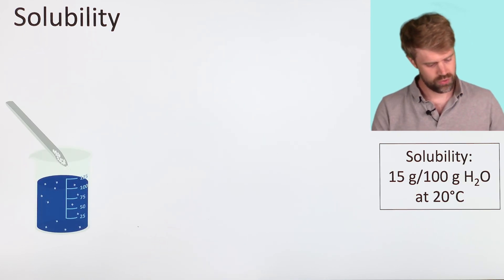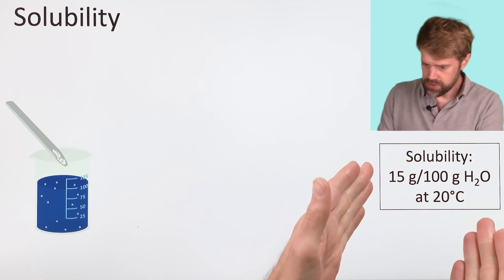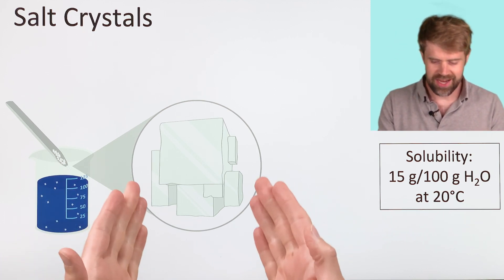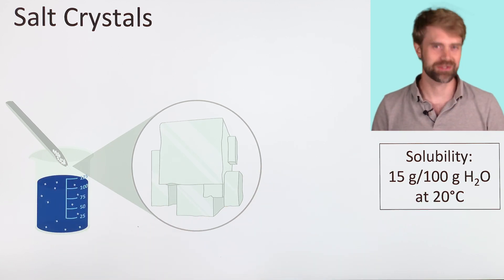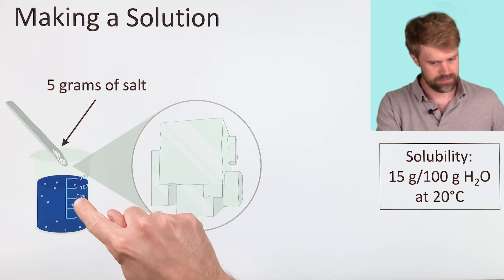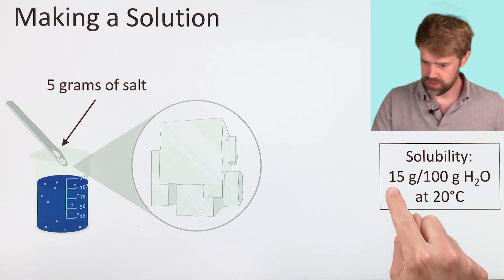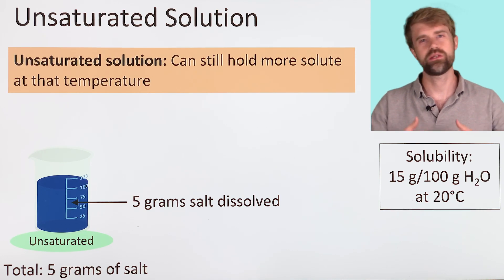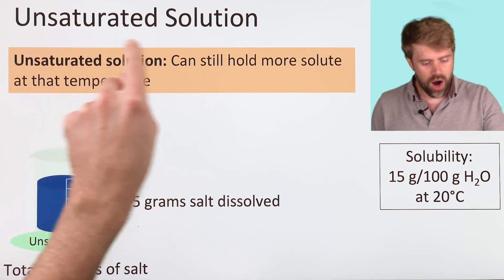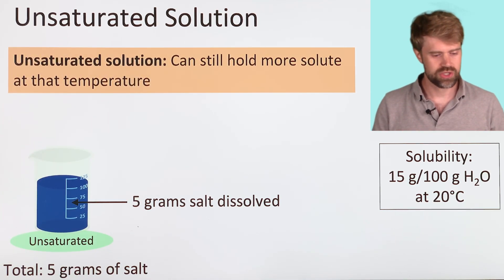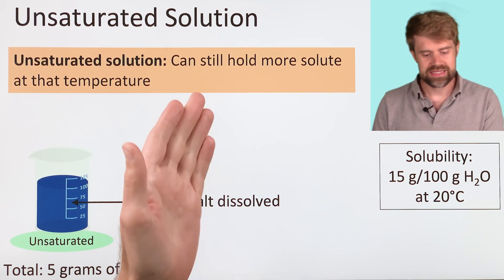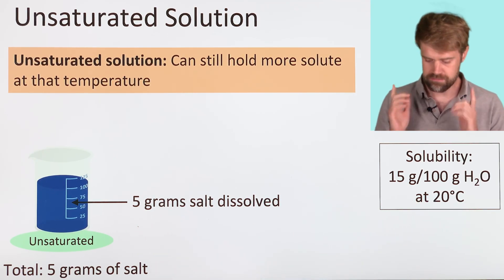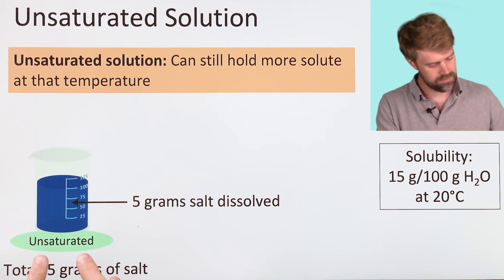Let's add some salt to 100 grams of water at 20 degrees Celsius. We'll keep our solubility data in the corner to remind us. Let's say we had 5 grams of salt. The solubility of our salt is 15 grams per 100 grams of water at 20 degrees Celsius, so our 5 grams dissolves pretty easily. That's because the solution is unsaturated. An unsaturated solution hasn't reached the maximum amount of solute — it can still hold more solute at that temperature. It has 5 grams dissolved and the maximum is 15 grams.